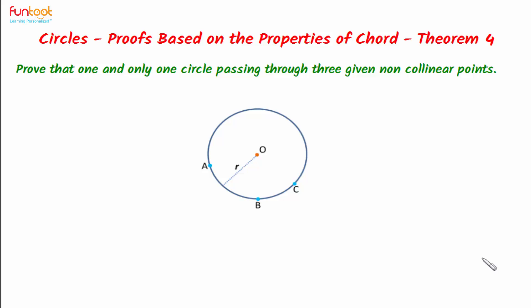Let's do a theorem. In this theorem we have to prove that one and only one circle passes through three given non-collinear points. If we have three non-collinear points A, B and C, we have to prove that there is one and only one circle which passes through these three points with center O and radius R. So basically here we have to prove two things: first, through the given three non-collinear points we can draw a circle, and second, through these given three points no other circle can be drawn.